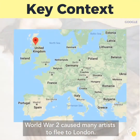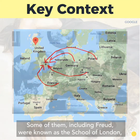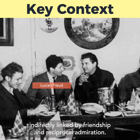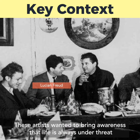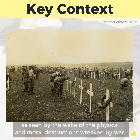World War II caused many artists to flee to London. Some of them, including Freud, were grouped together and were known as the School of London, indirectly linked by friendship and reciprocal admiration. These artists wanted to bring awareness that life is always under threat under the circumstances of modernity, as seen by the wake of the physical and moral destructions wreaked by war.